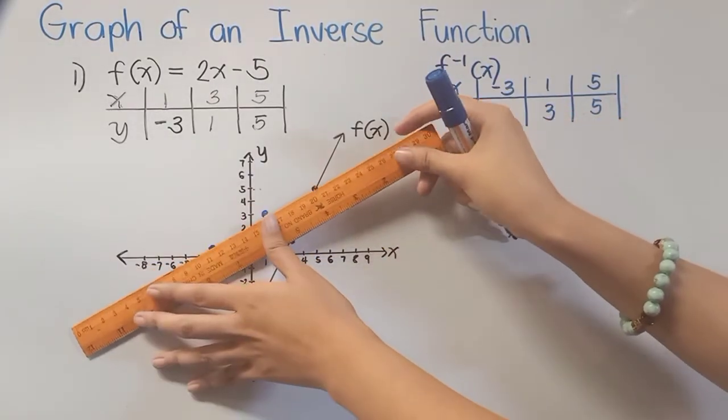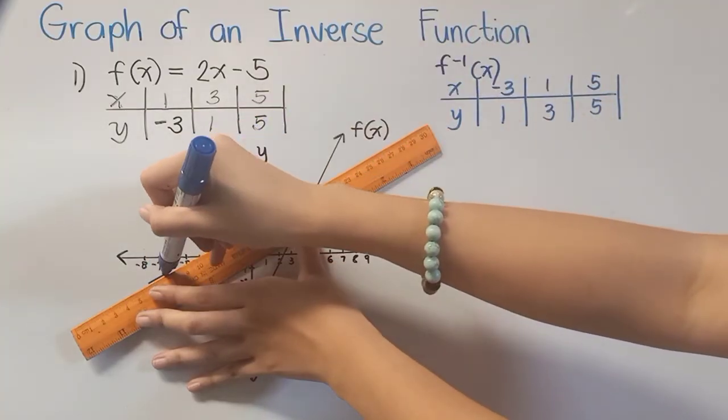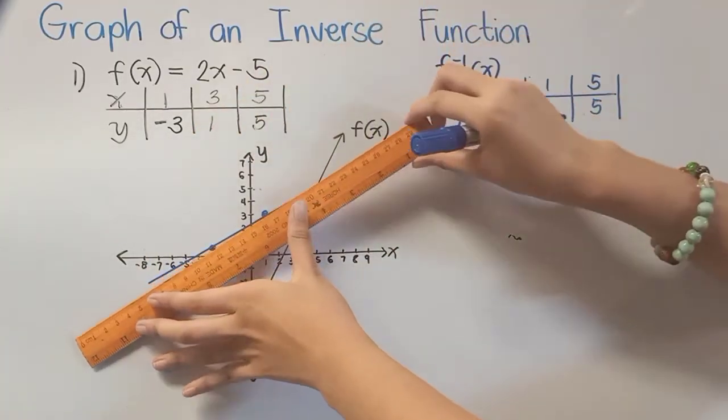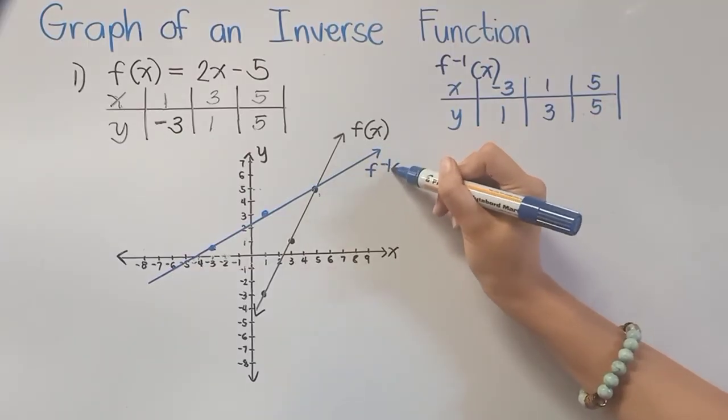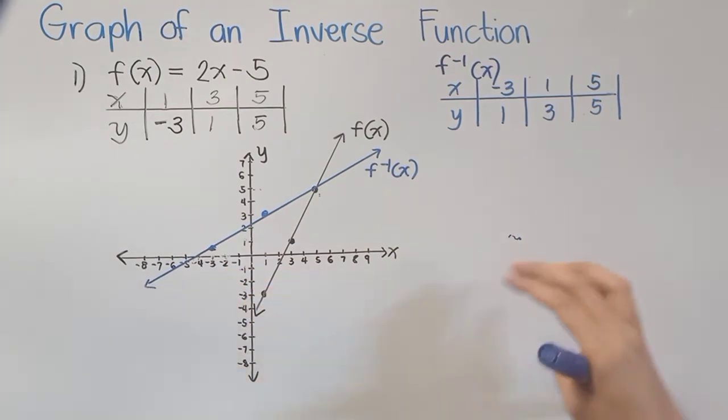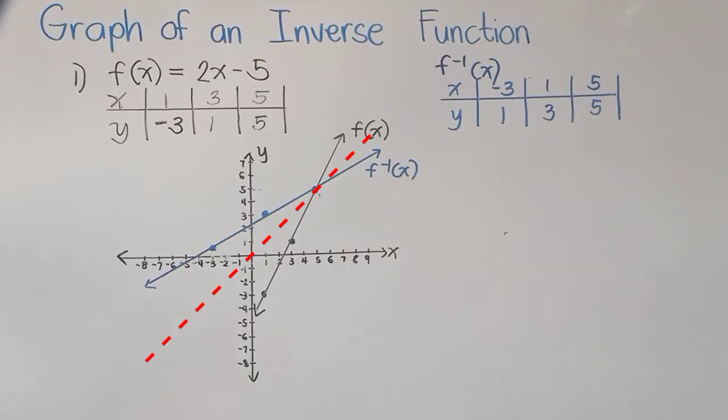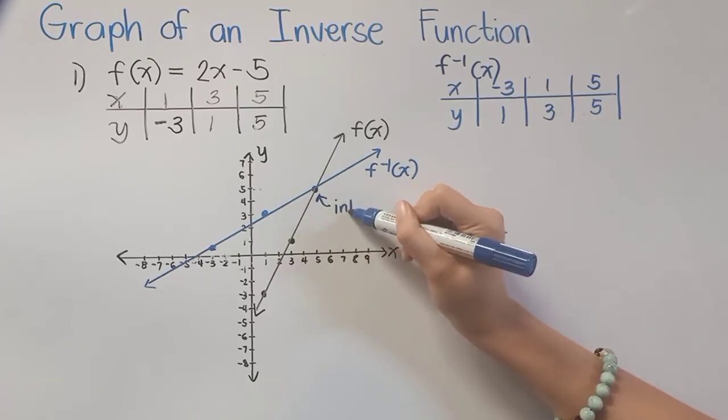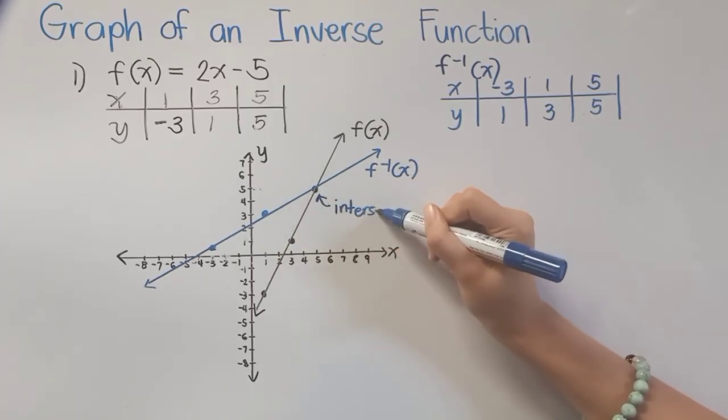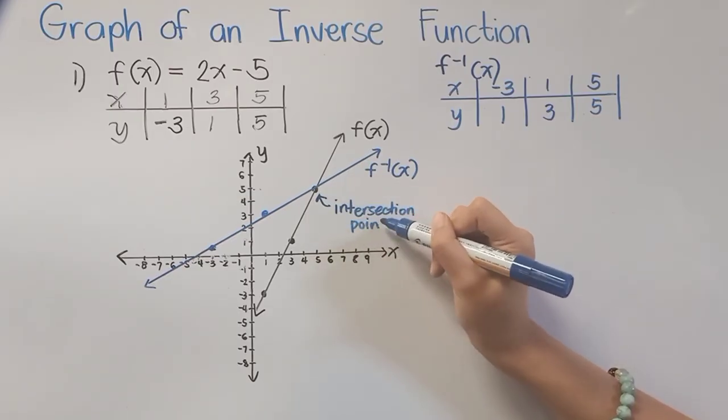Now the next step is again to connect all of our points in order to have here our line. Now this line here is our f^(-1)(x) or the inverse function. So as you can see here, both graphs are reflection of each other. And this is the point where they intersect. It's in this point, 5, 5. So I will be placing here intersection point, 5, 5.